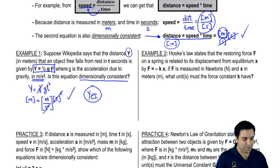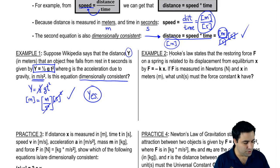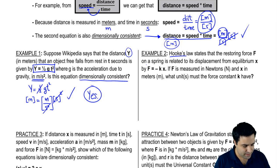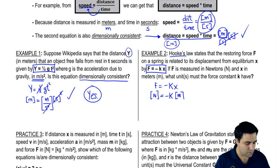Let me do another example. Another kind of question would give you an equation and ask what the units are for one particular variable. For example, Hooke's law — which we'll see later — says the restoring force F in a spring is related to the displacement from equilibrium X. Basically the equation is F equals negative KX. If F is measured in newtons and X is measured in meters, what units must the force constant K have?